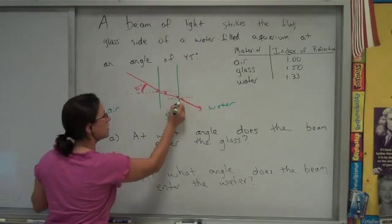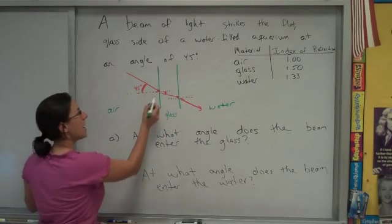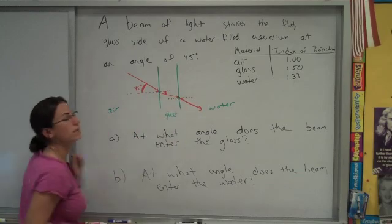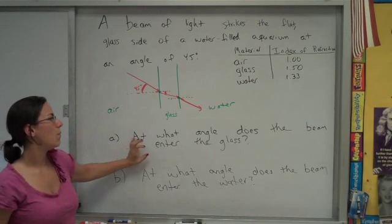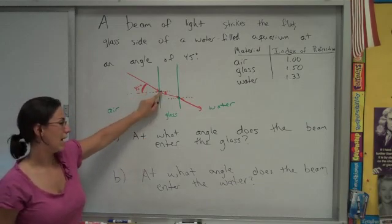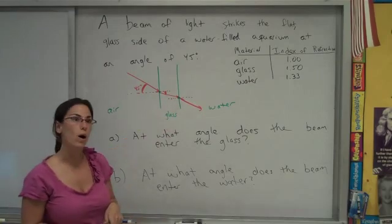Okay, so again, two boundaries, two places where refraction happens. Happens when it moves from the air to the glass, and happens when the light moves from the glass to the water. And we want to know about that angular refraction in both cases. In part A, as it enters the glass. And then we'll worry about B, as it enters the water shortly.